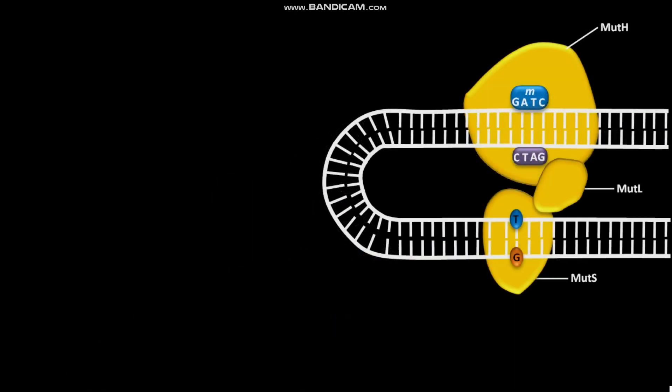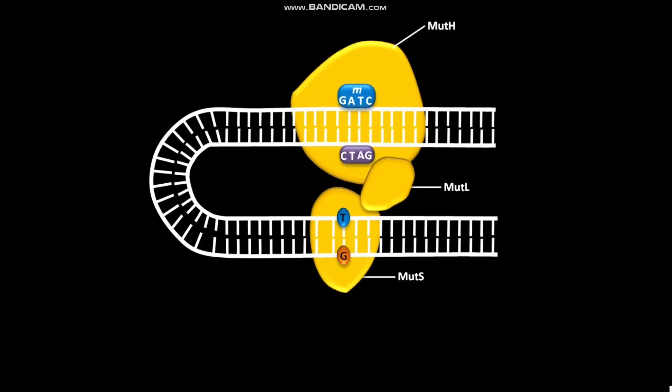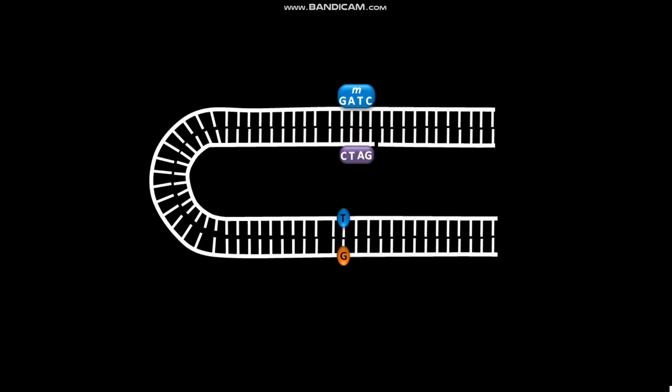MutH has a site-specific endonuclease activity. This site-specific endonuclease activity is inactive until the complex encounters a hemimethylated GATC sequence. When the complex encounters a hemimethylated GATC sequence, the site-specific endonuclease activity of MutH is activated. By its site-specific endonuclease activity, MutH then makes a cut or cleavage specifically in the non-methylated strand.